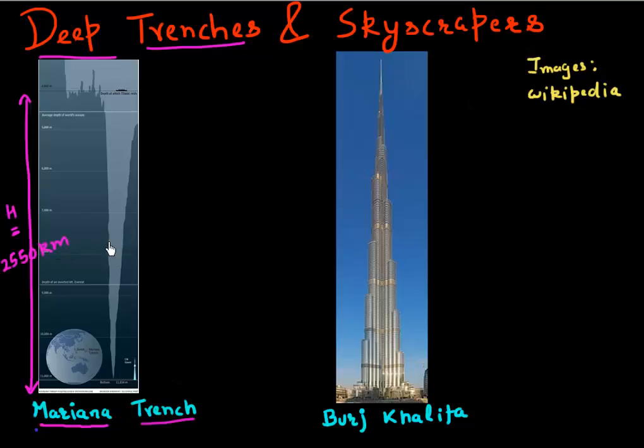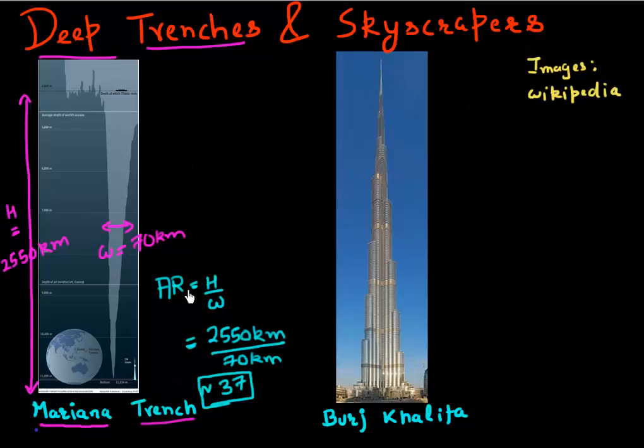If you look at how wide it is, it varies from top to bottom, but on average this Mariana Trench has a width of 70 kilometers. If I look at the aspect ratio, defined as height divided by width, for the Mariana Trench it has an aspect ratio of 2,550 kilometers divided by 70 kilometers, which is approximately 37.